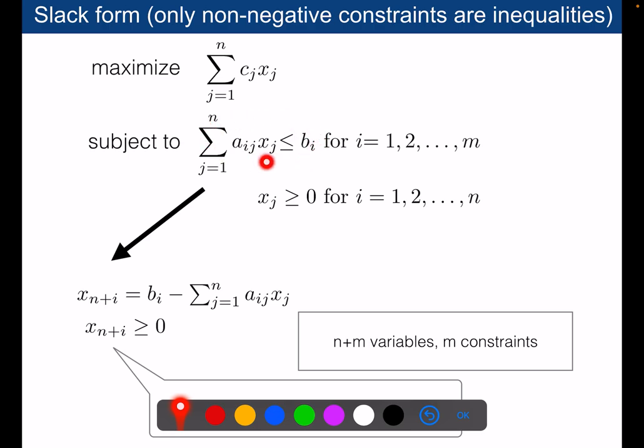For instance, this is not allowed in the slack form. And so to replace this constraint with an equivalent equality constraint, we will say that bi minus this is equal to a new variable here. This will be what we call a slack variable.